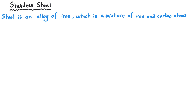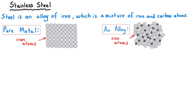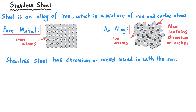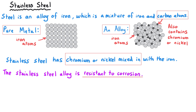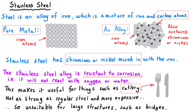Sometimes it's possible to prevent iron or steel from going rusty by making a type of steel called stainless steel. All types of steel are an alloy — iron mixed with other elements such as carbon — but when making stainless steel you also mix in a small amount of chromium or nickel. This gives you an alloy that is resistant to corrosion and won't react with water or oxygen. However, it's not quite as strong as you might need for large structures like bridges, and it would be quite expensive due to the extra elements required.